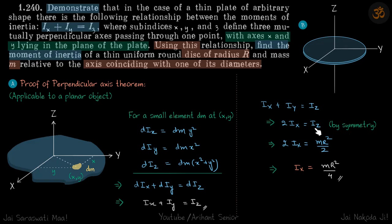Iz we know, we just proved in the previous problem, it is MR squared by 2 about this axis. So this gives Ix equal to MR squared by 4.